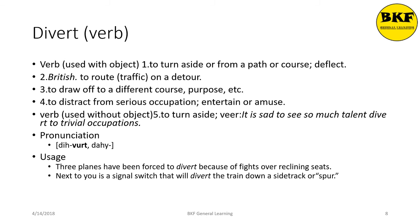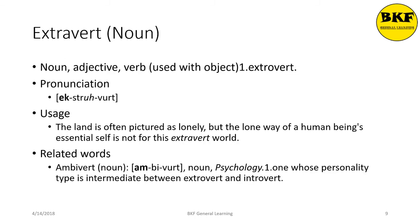Extrovert is a noun; it means a person who is outward-turning in personality. Stress is on the first syllable. Usage: 'The land is often pictured as lonely, but the lone way of a human being's essential self is not for this extrovert world.' Ambivert is a related noun — it means a person whose personality type is intermediate between extrovert and introvert.